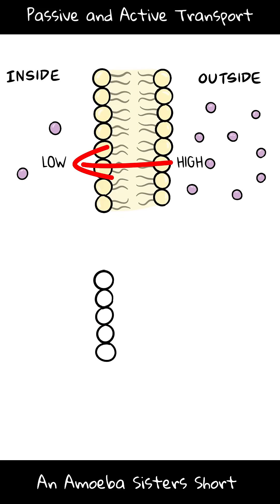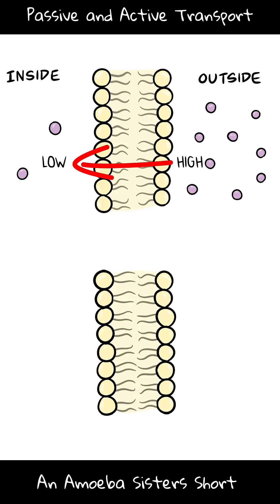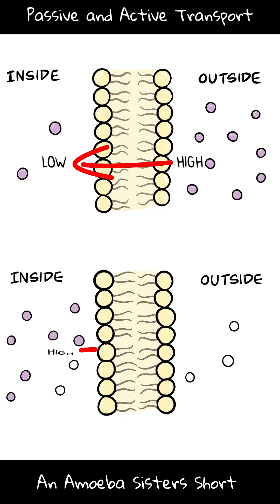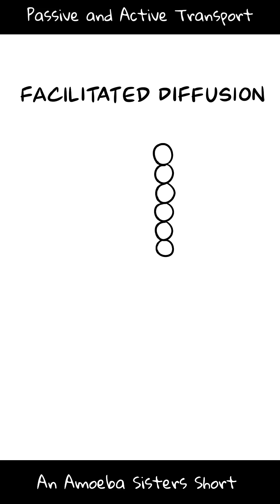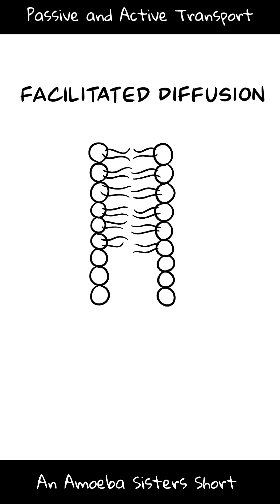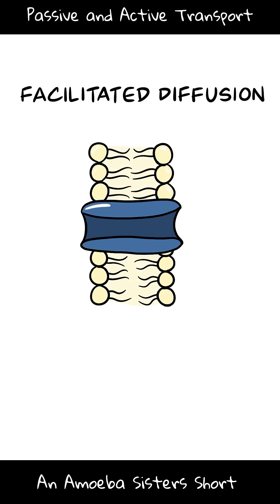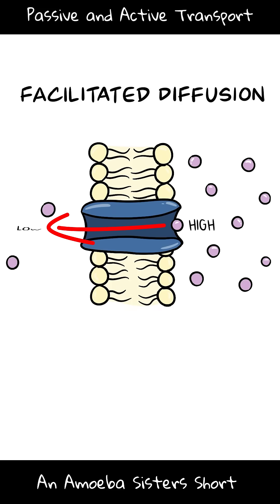If the high concentration of a substance is inside the cell, the net movement will be out. Some substances need to go through a protein to get through — facilitated diffusion. But since this goes with the gradient and doesn't require ATP, it's still passive transport.